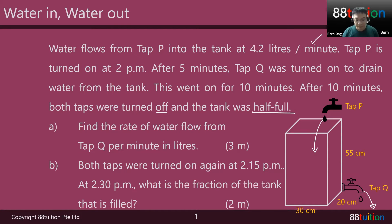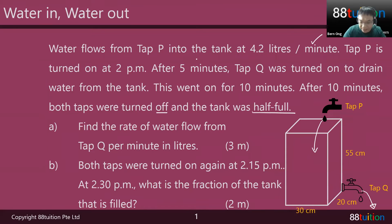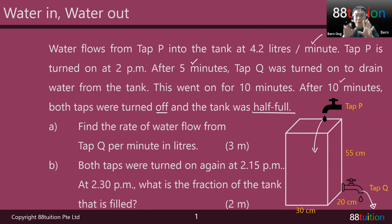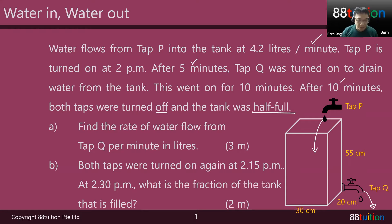For part B, both taps were turned on again at 2:15PM. Down here you got 5 minutes, down here you got 10 minutes, so it's like 15 minutes clear. At 2:15PM, both were turned on again at the same time. At 2:30PM, what is the fraction of the tank that is filled?